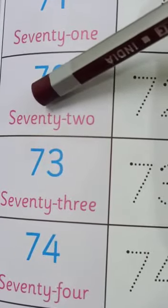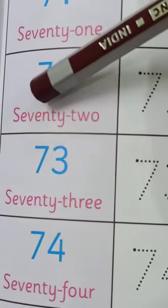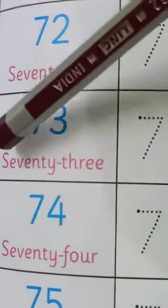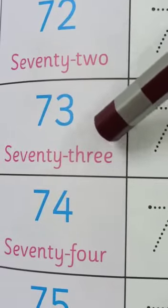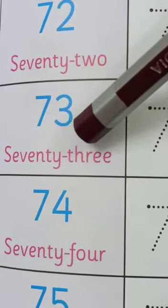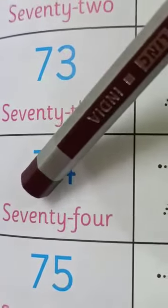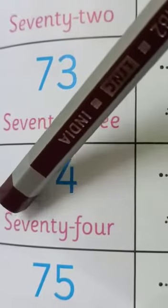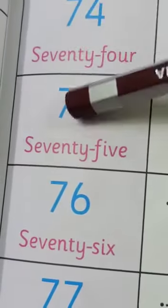Next number is 72. S-E-V-E-N-T-Y, 70, T-W-O, 2, 72. Next number is 73. S-E-V-E-N-T-Y, 70, T-H-R-E-E, 3, 73. Next number is 74. S-E-V-E-N-T-Y, 70, F-O-U-R, 4, 74. Next number is 75.